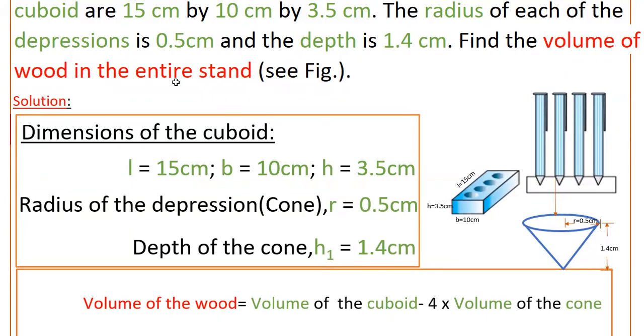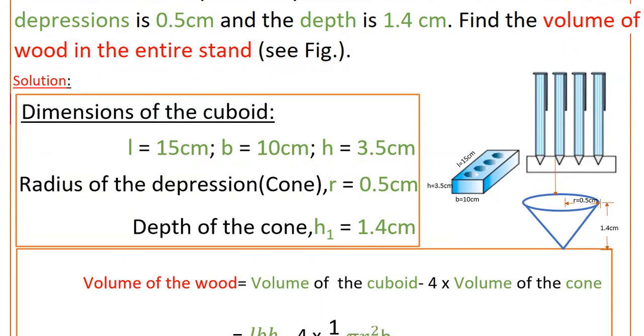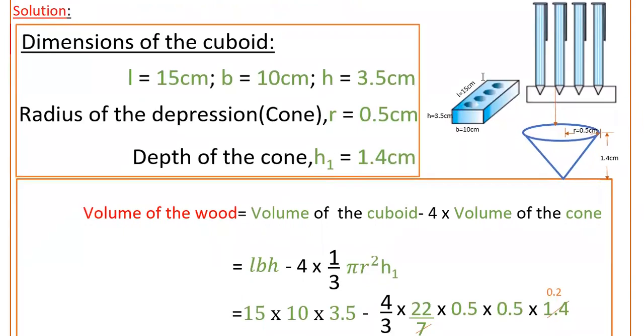So we have to find the volume of wood in the entire stand. Volume of wood equals volume of the cuboid minus 4 times volume of the cone. Because here there are four conical depressions, we have to deduct these four conical depressions from this cuboid.